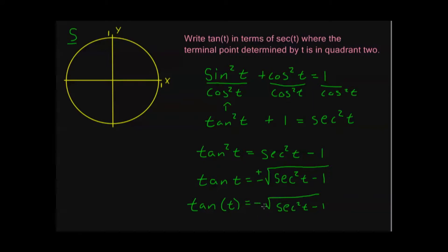This is a good problem — review it. There are many homework problems very similar to this, all done the same way. Identify the Pythagorean identity that covers all the functions you're using. Isolate the function you want — since it says write tangent in terms of secant, isolate tangent and put everything else on the right-hand side. Then take the square root, and use your quadrant information to determine whether it's plus or minus.